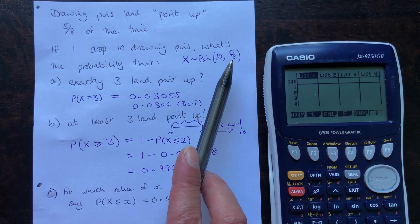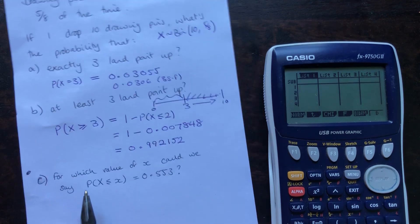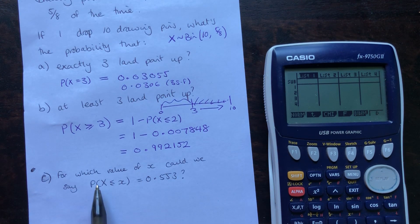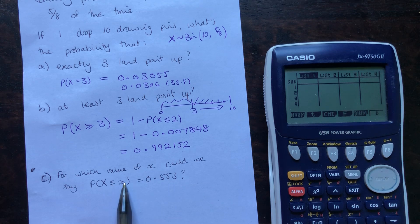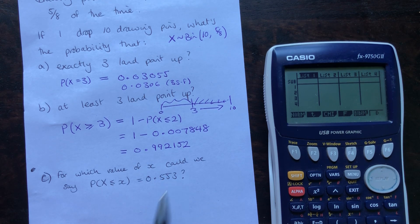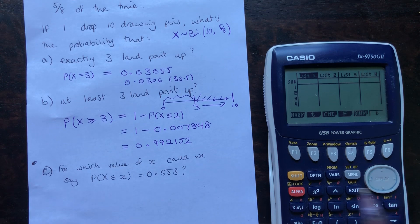Ten trials, probability of success is 5/8. So for which value of x could we say that the probability that x is less than or equal to that number is 0.553? So hop on over to your graphics calculator.